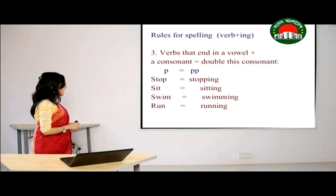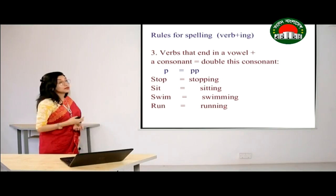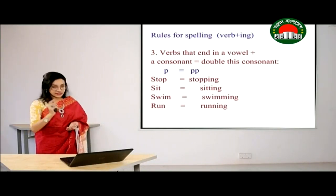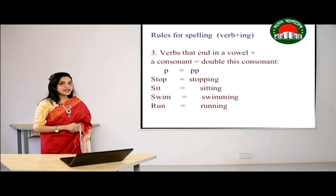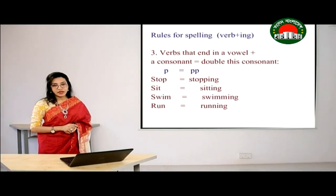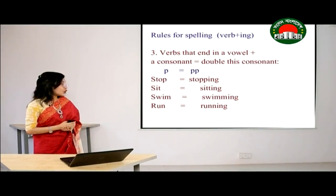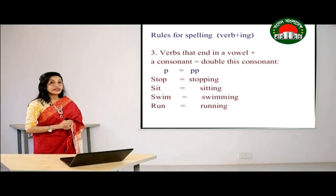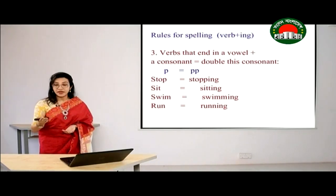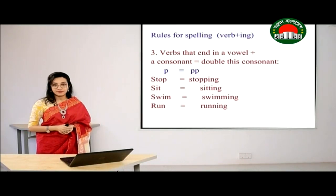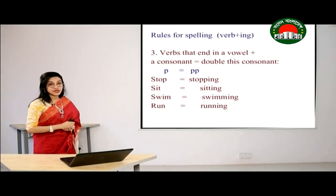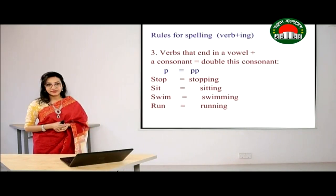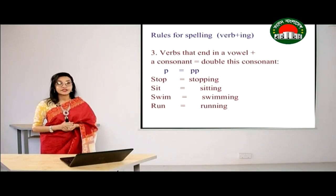The last rule: verbs that end in a vowel plus a consonant — double the consonant, then add -ing. For example, 'stop': the last letter is a consonant 'p,' and the letter before it is a vowel 'o.' So we double the consonant: 'stopping' — s-t-o-double p-i-n-g. Likewise, we double the consonant in 'sitting,' 'running,' and 'swimming.' If you follow these rules, you won't make any spelling mistakes in future. But remember these are general rules — some exceptions can also occur.